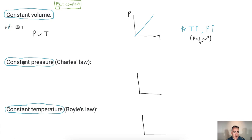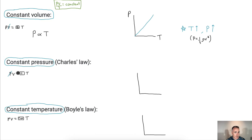Now, what about constant pressure? With PV equals some constant times T, if pressure is kept constant, we ignore it, and we can see that volume is proportional to temperature. A graph of volume versus temperature in Kelvin would be linear.